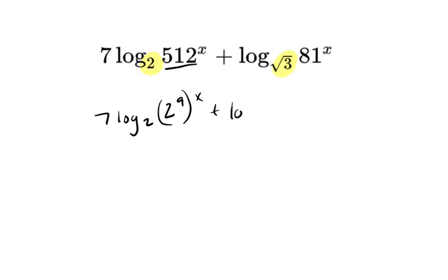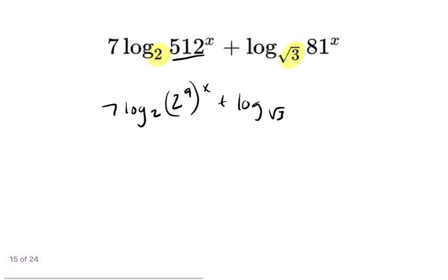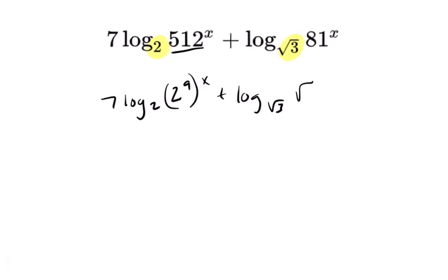And if you play with the square root of 3 enough, well, I know 3 to the 4th is 81, and the square root of 3 would have to be multiplied twice as many times. So I know the square root of 3 would have to be raised to the 8th power to get 81, and that's the x.